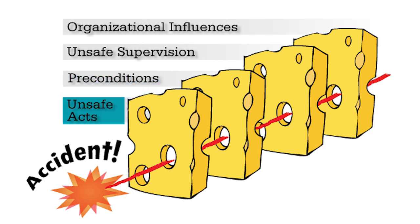Layer 4: Unsafe Acts. Finally, we have the frontline operators — the controllers, pilots, technicians, and all the people involved who directly interact with the system. Mistakes happen because, you know, humans. Claiming that you will never have a little slip or lapse here and there is just deceiving yourself. Sometimes you just realize you were in a situation where you had poor judgment, thinking to yourself, 'I should have known better.'